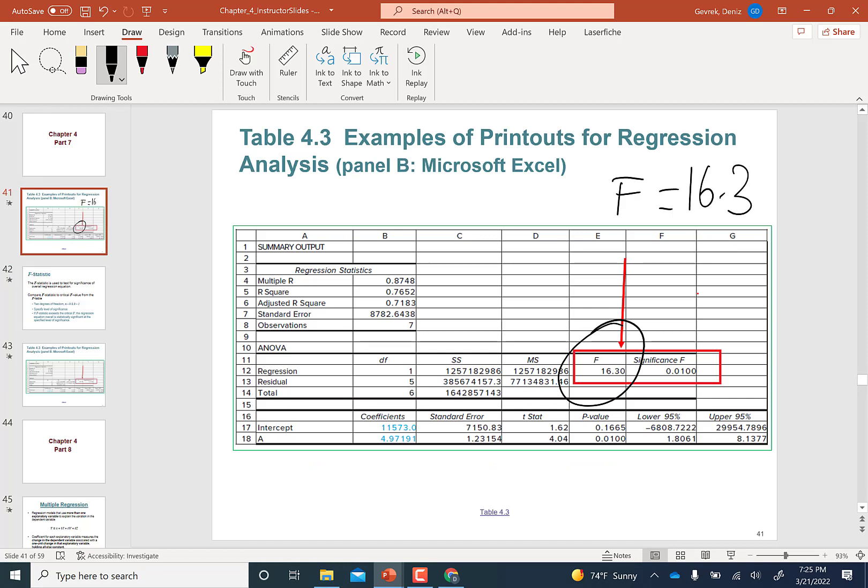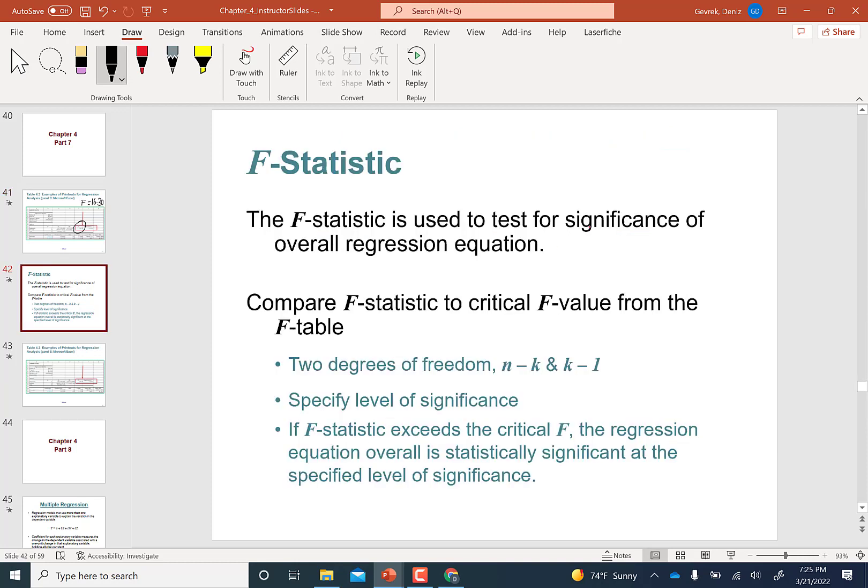Now we are going to carry this to this page. F stat is 16.3. Degrees of freedom: N minus K equals seven observations minus two, that's five, and K minus one equals two minus one equals one. So you have two degrees of freedom.